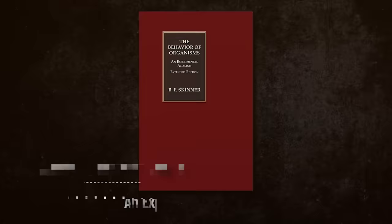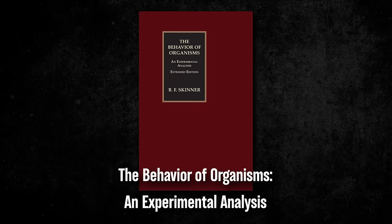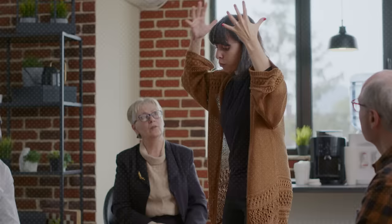Following Skinner's 1938 book, The Behaviour of Organisms and Experimental Analysis, operant conditioning supplanted classical conditioning as the dominant theory. It was able to explore so much more of human behavior, but some psychologists still believed there were problems with this theory. For example, if all human learning was alleged to be the result of operant conditioning, how could we possibly learn something as complex as language?